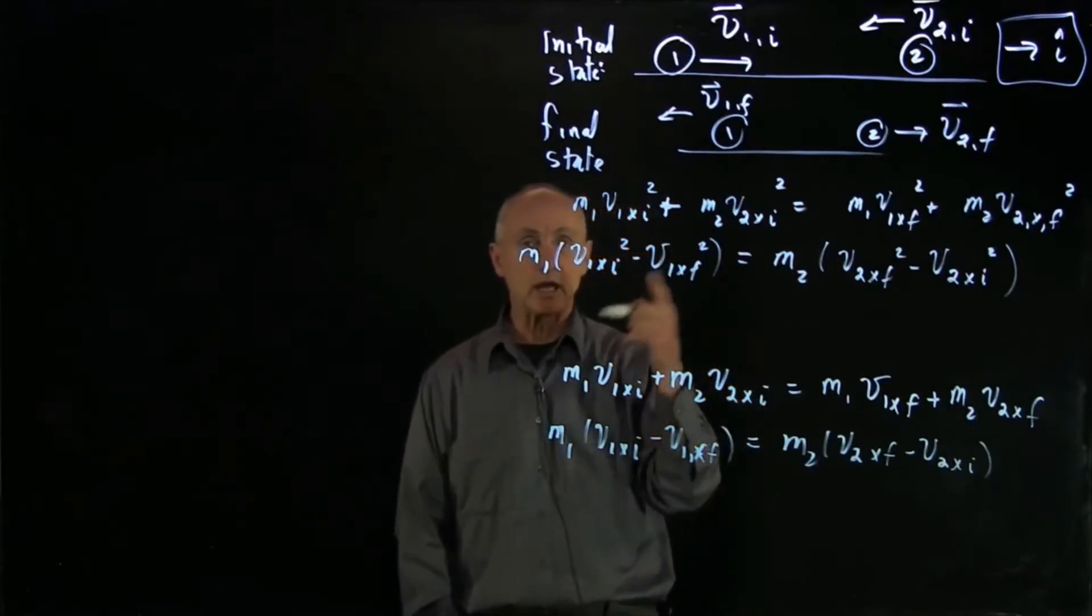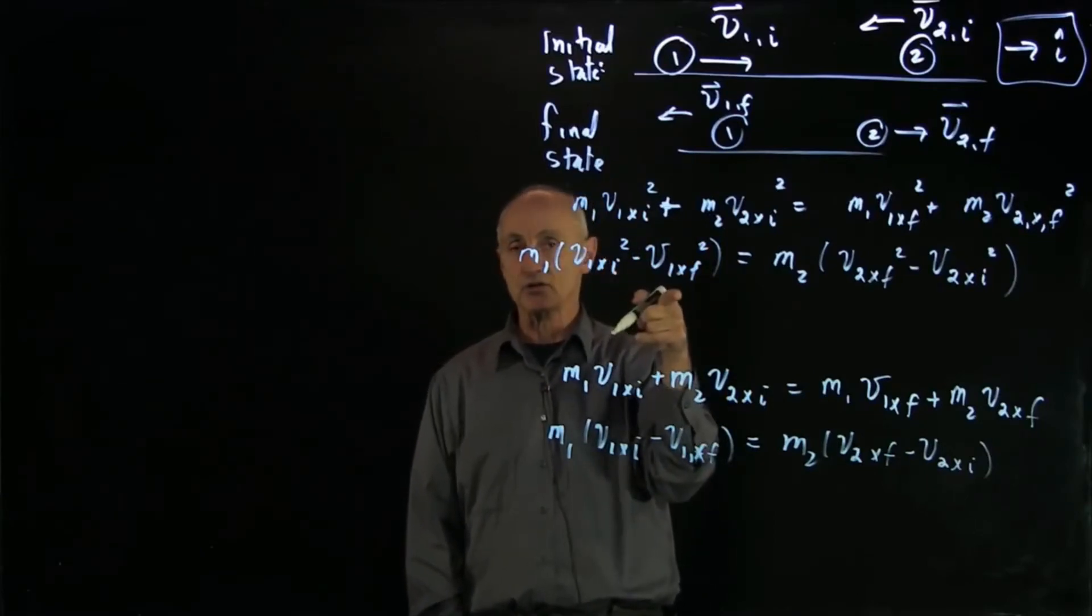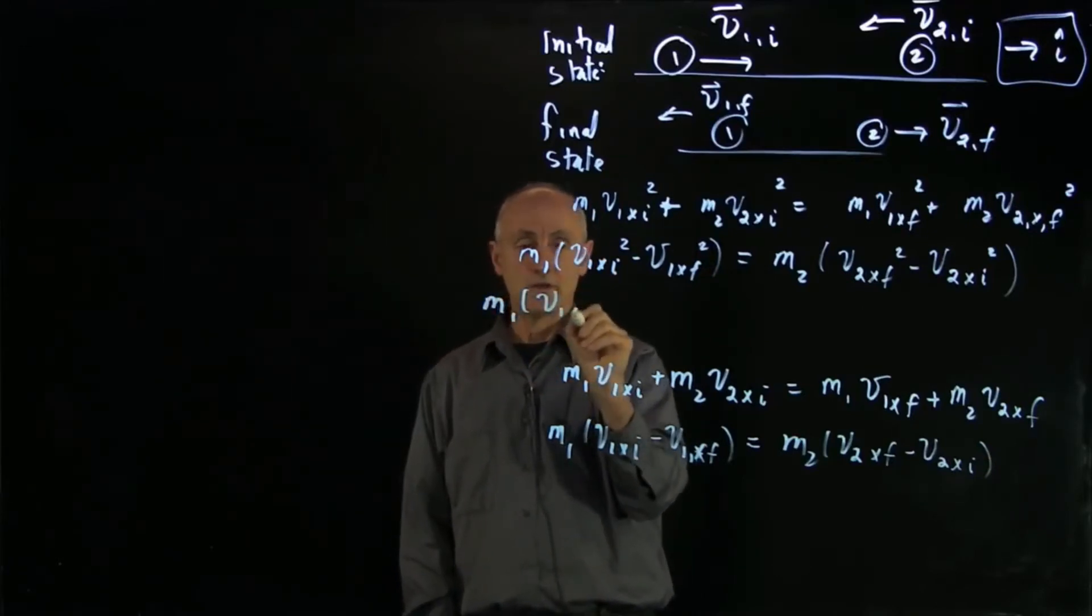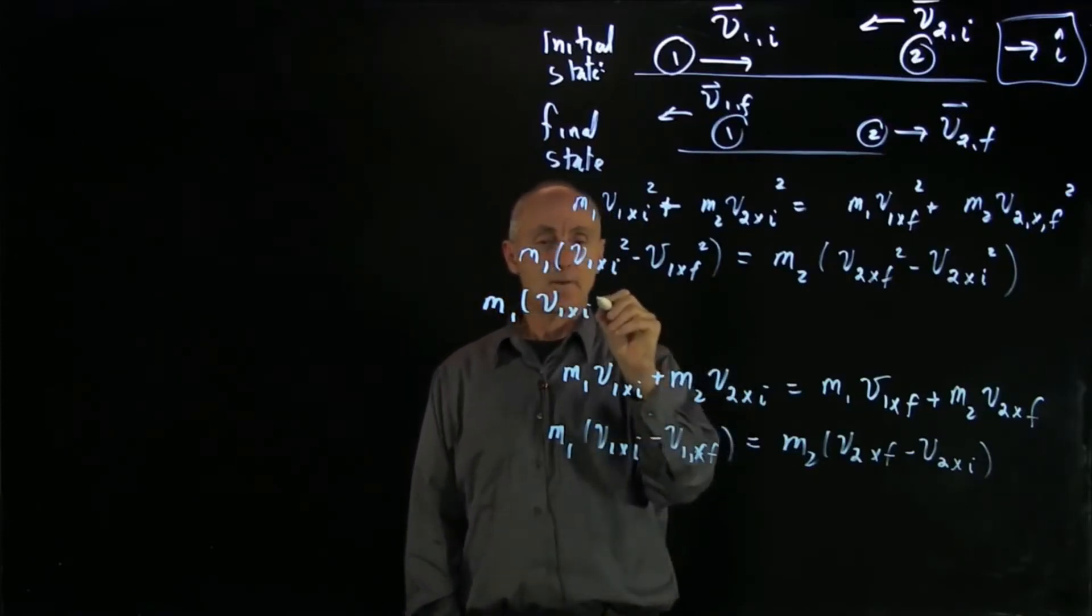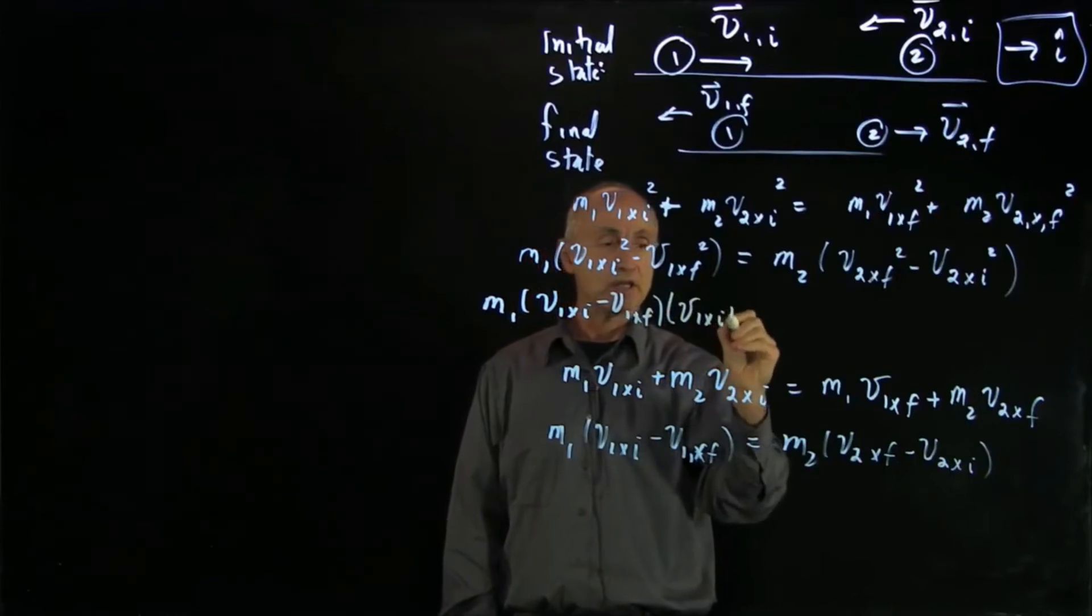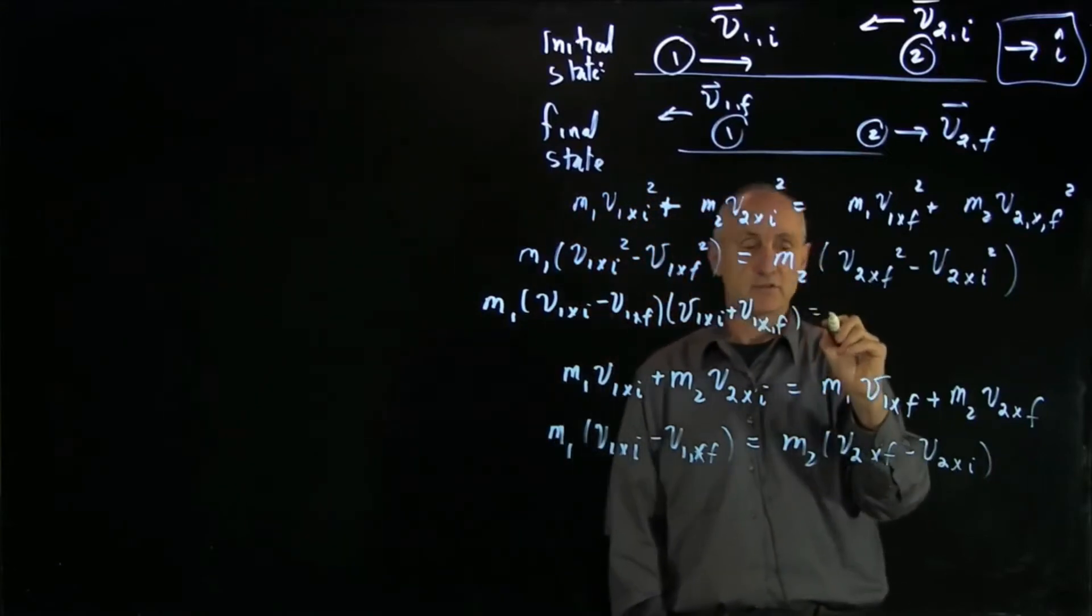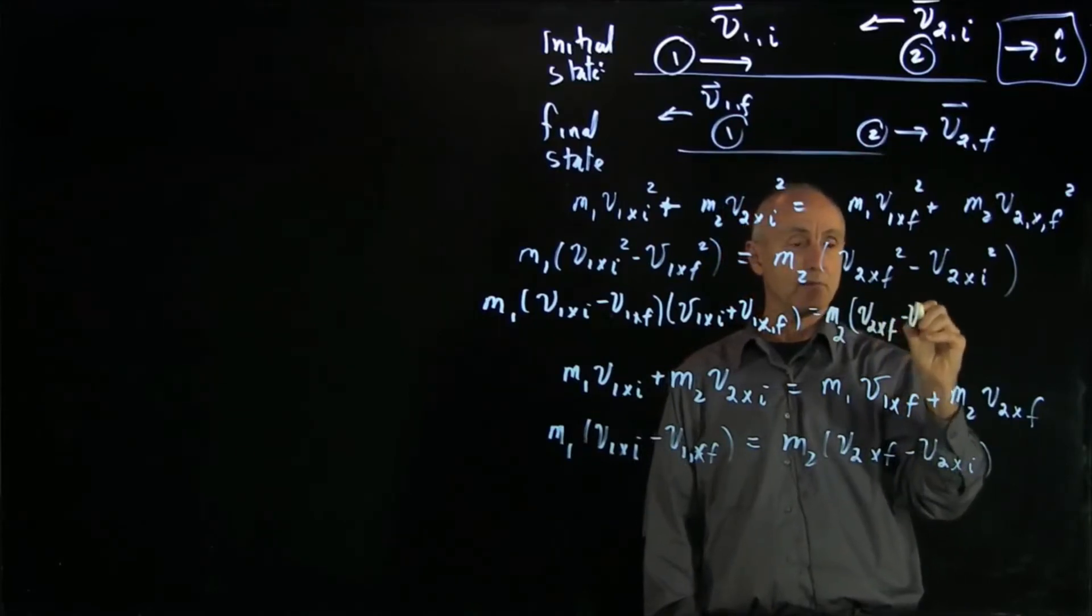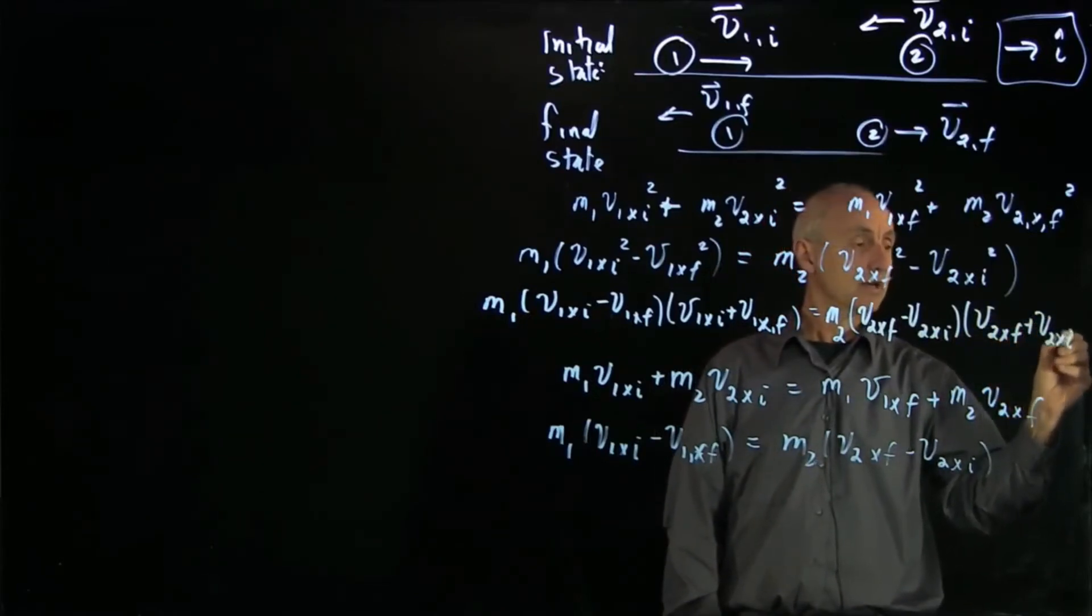Now, here comes the algebraic trick in which I'm going to linearize these systems. This is a squared minus b squared, which factors into a plus b times a minus b. So let's give ourselves a little room. M1 v1 x initial plus, let's put the minus sign first, minus v1 x final times v1 x initial plus v1 x final. Factored that term, we have the same factoring on the other side. So it's just identical v2 x final minus v2 x initial times v2 x final plus v2 x initial.